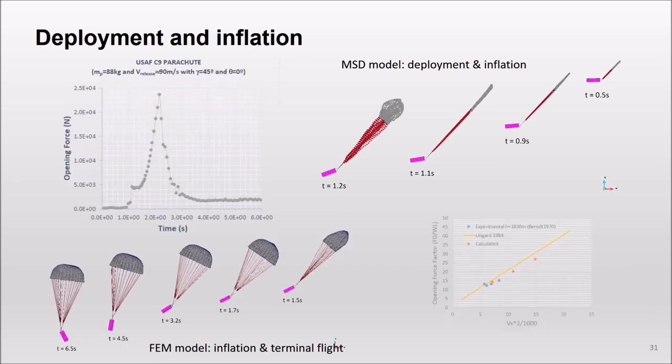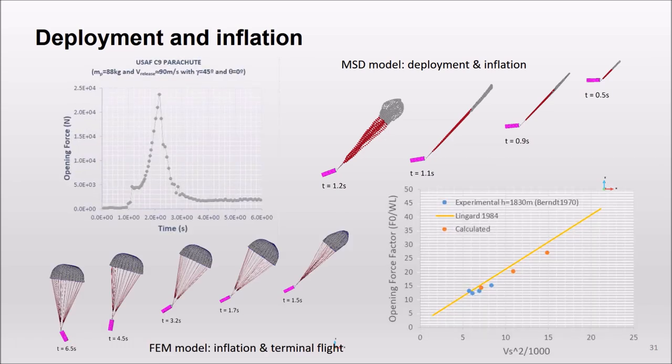Finally, this is a simulation of the deployment of a drag parachute. The simulation starts with the mass-spring damping model, which completes the extraction and part of the inflation of the canopy. When the distortion of the element is acceptable, the solver switches to the finite element model to complete the inflation and the terminal flight. It is important to note that the aerodynamics in this example is calculated with a semi-empirical filling time and inflation model. The agreement with flight test data is quite satisfactory.